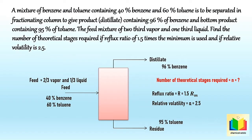In this example we have to calculate the number of theoretical stages required. The composition is given as weight percent of benzene, not mole percent, so we have to convert weight percent to mole percent. The feed condition is not given directly, so we have to calculate Q. The reflux ratio is given in terms of the minimum reflux ratio, so we have to calculate the minimum reflux ratio. Equilibrium data is not given directly, but we have relative volatility, so from relative volatility we have to calculate equilibrium data.